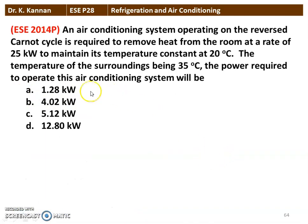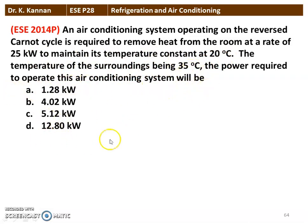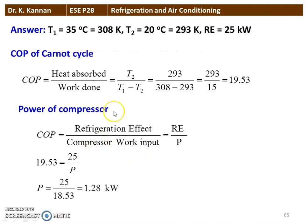The next question from the 2014 question paper: An air conditioning system operating on a reversed Carnot cycle is required to remove heat from the room at the rate of 25 kW to maintain its temperature at 20°C. The surrounding temperature is 35°C. The power required to operate the air conditioning system is — the correct answer is 1.28 kW.